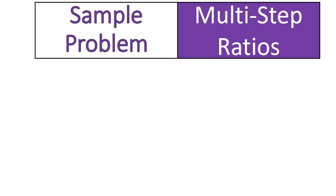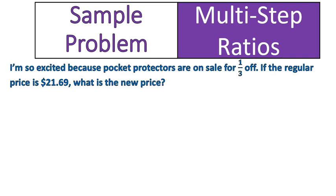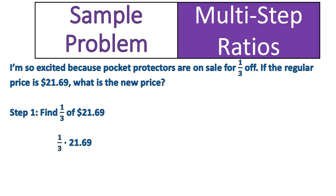Let's get into why we call this multi-step ratios. In this sample question: pocket protectors are on sale for one-third off. If the regular price is $21.69, what is the new price? That's because there's two steps. The first step is to find the discount — in this case, one-third of $21.69. We're going to change this English sentence into a math sentence: one-third times 21.69.